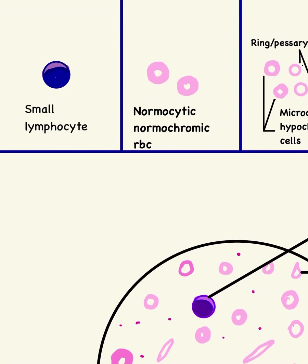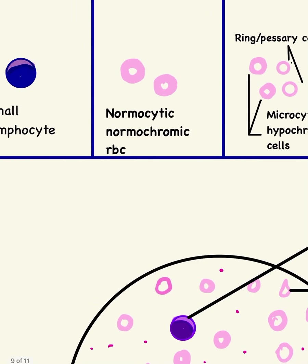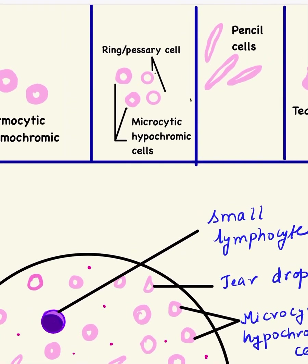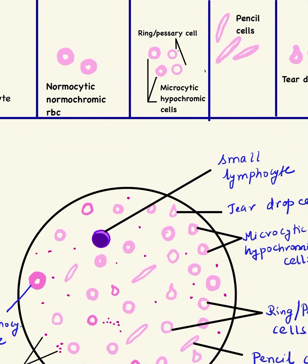In iron deficiency anemia, when we make the microscopic picture, we first draw a small lymphocyte. A small lymphocyte is a rounded cell with a round nucleus, purplish clumped chromatin, and scanty cytoplasm, with a size of about 8 to 10 microns. The normocytic normochromic RBC will be the size of the lymphocyte nucleus, and the central pallor will be less than one third of the area of the RBC. Then we make the microcytic hypochromic cells, which are smaller in size than the lymphocyte nucleus, and the central pallor will be more than one third.